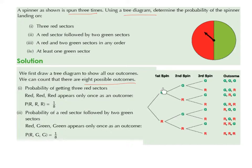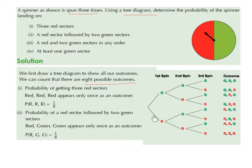If we land on green the first time and green the second time, on the third spin we can land on green or red. If we land on green the first time and red the second time, we can land on green or red for the third spin. If we land on red the first time and green the second time, we can land on green or red for the third spin. So this is our list of outcomes.